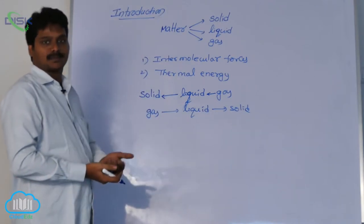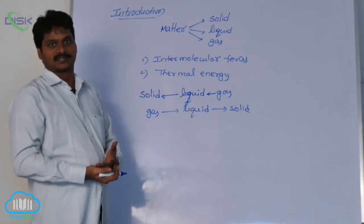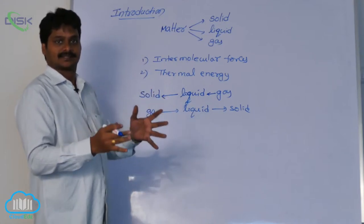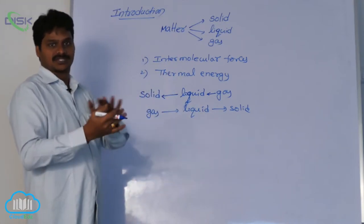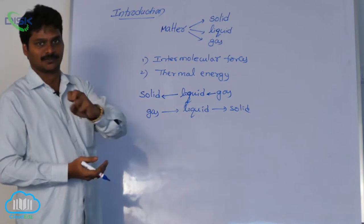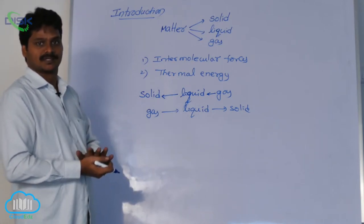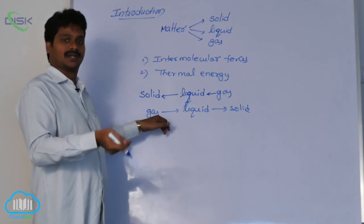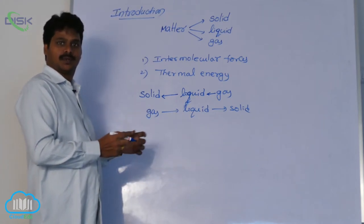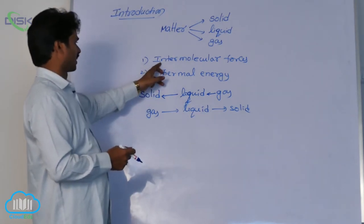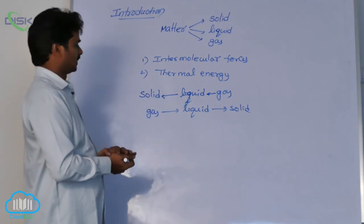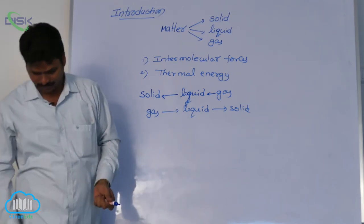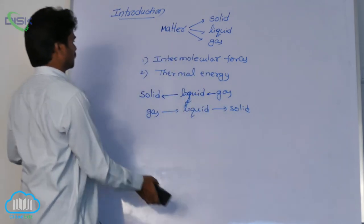At a certain low temperature, thermal energy is very less. That is why intermolecular forces make the particles come closer and clinch with each other. Finally, they get fixed positions, and the substance then occupies a solid state. So, solid state is due to the predominance of intermolecular forces over thermal energy. Now let us see about the characteristics of solid state.